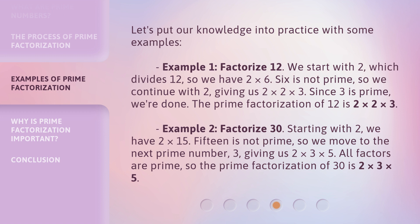Example 2: Factorize 30. Starting with 2, we have 2 times 15. 15 is not prime, so we move to the next prime number, 3, giving us 2 times 3 times 5. All factors are prime, so the prime factorization of 30 is 2 times 3 times 5.